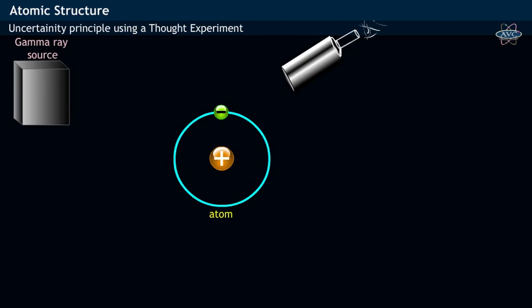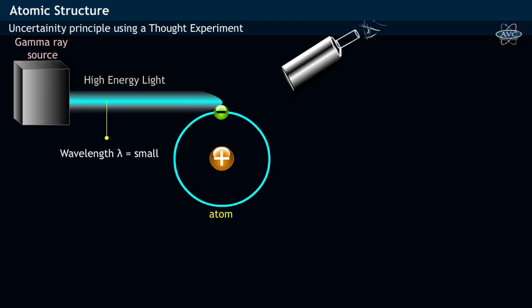Now, from the left side, a high-energy light with short wavelength like gamma rays is made to fall or illuminated on the electron.